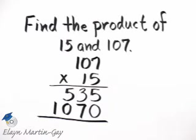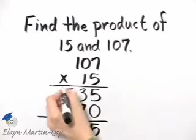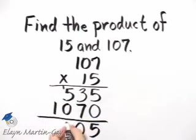We add these partial products. 5 and 0, that's 5. 3 and 7 is 10, carry the 1. 5 and 1 is 6. And then 1.